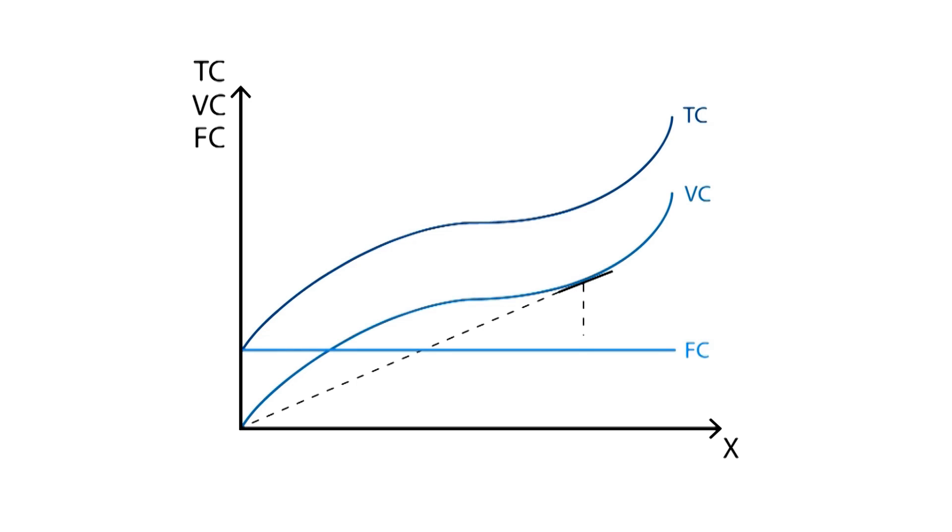Therefore, this inflection point, noted as E, differentiates two phases: the first phase, where the growth rate of variable cost is slower than the growth rate of production, and the second phase, where variable costs grow much faster than output.